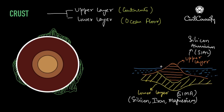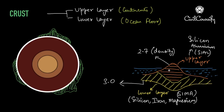There is also a significant difference in density between the upper and lower layers. The upper layer has a density of 2.7, whereas the lower layer has a density of 3.0. This means the upper layer has a lower density than the lower layer, which means the continents are essentially floating above the ocean floor. The thickness of the crust is greater under the continents compared to the ocean floor, and the depth of the crust varies between 8 to 40 kilometers.